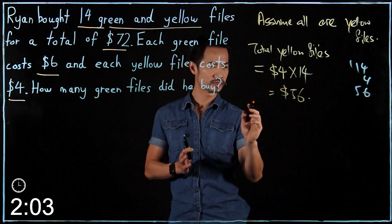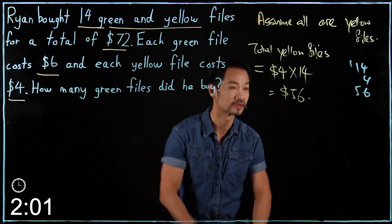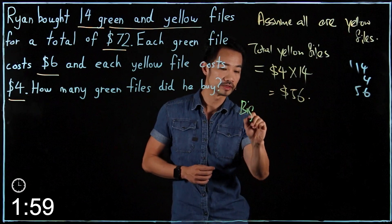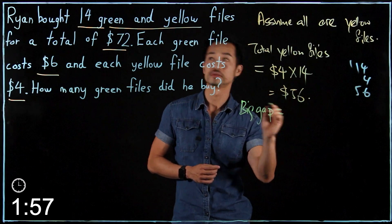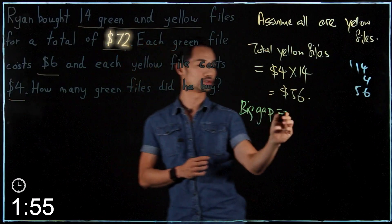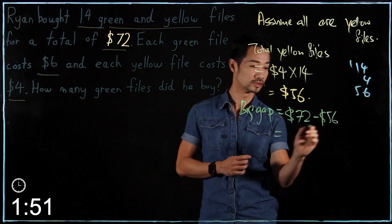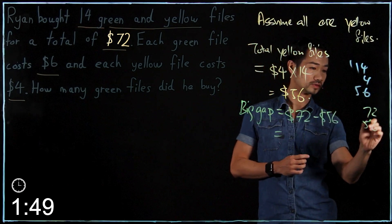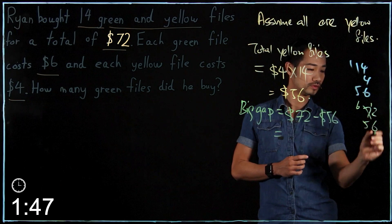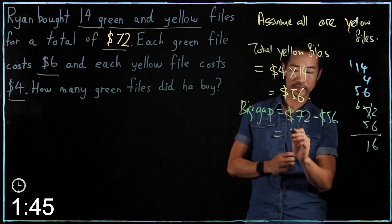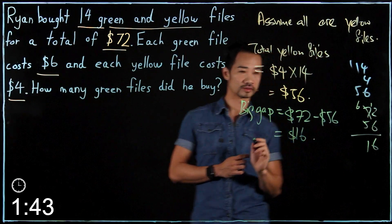Then I need to find the big gap. Big gap equals to 72 minus 56, which is 16.